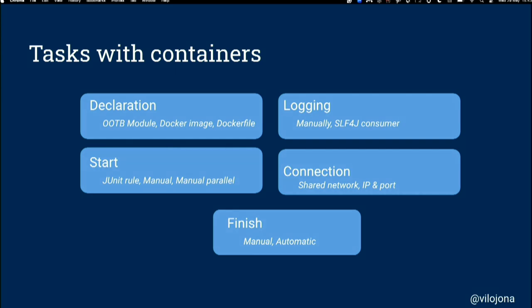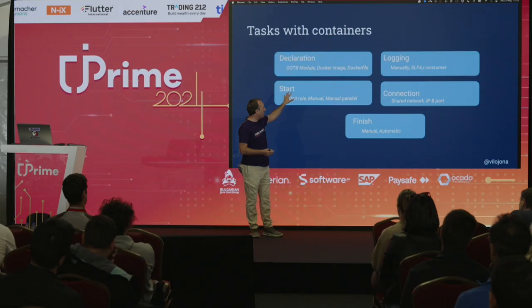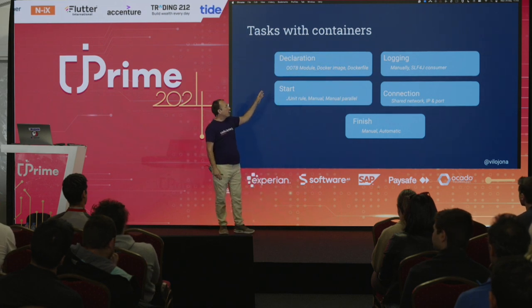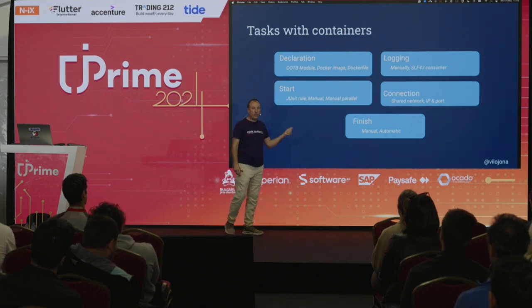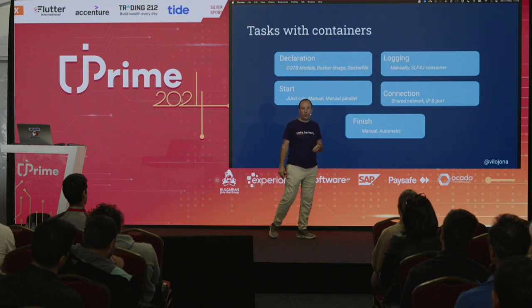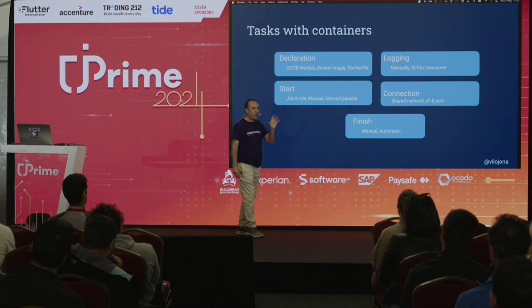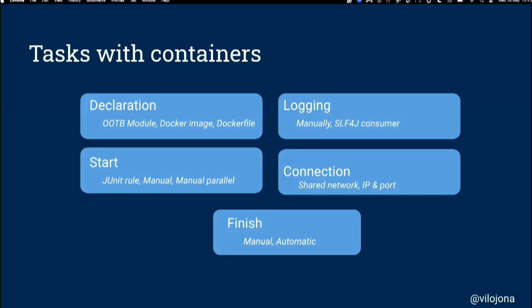The tasks you can do with test containers: you define which container you want — a PostgreSQL database, an S3, Kafka. You have different ways of doing it. They provide out-of-the-box modules, so the Kafka container is already provided. But you can also create containers based on a Docker image — it will pull it from Docker Hub. Or if you have a Dockerfile, it will build the image and spin up the container.